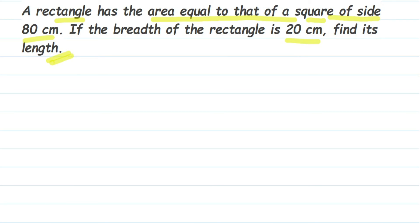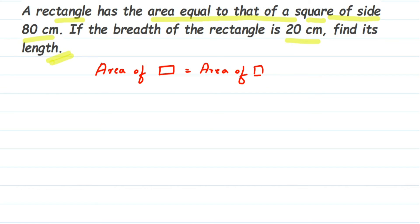We are going to first write down what we know from the question. They have given that area of rectangle is same as area of square. Breadth B is equal to 20 centimeter, and side is equal to 80 centimeter.